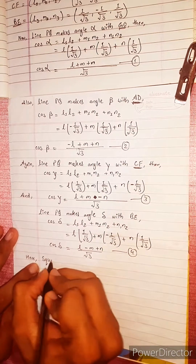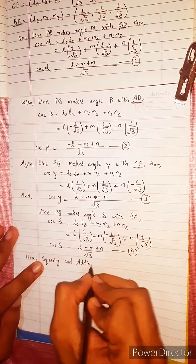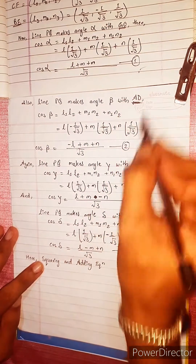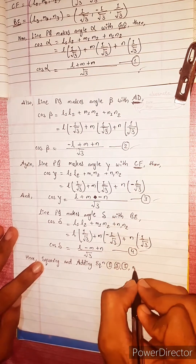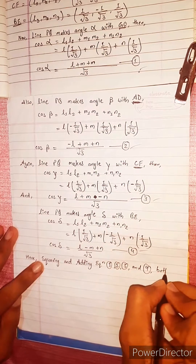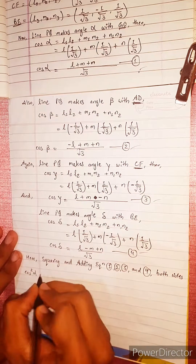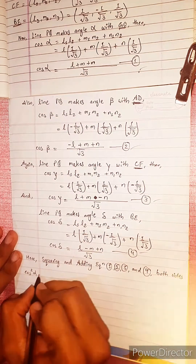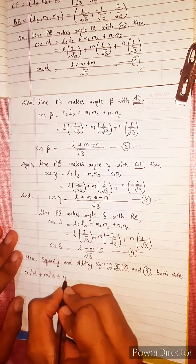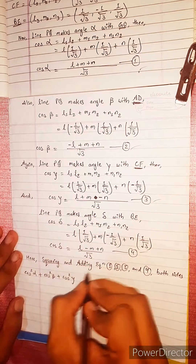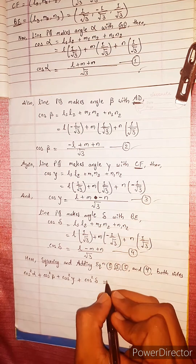Squaring and adding equations 1, 2, 3 and 4 on both sides. Left side gives cos²α + cos²β + cos²γ + cos²δ. Right side: squaring (L + M + N)/√3, (−L + M + N)/√3, (L + M − N)/√3, and (L − M + N)/√3 and adding.